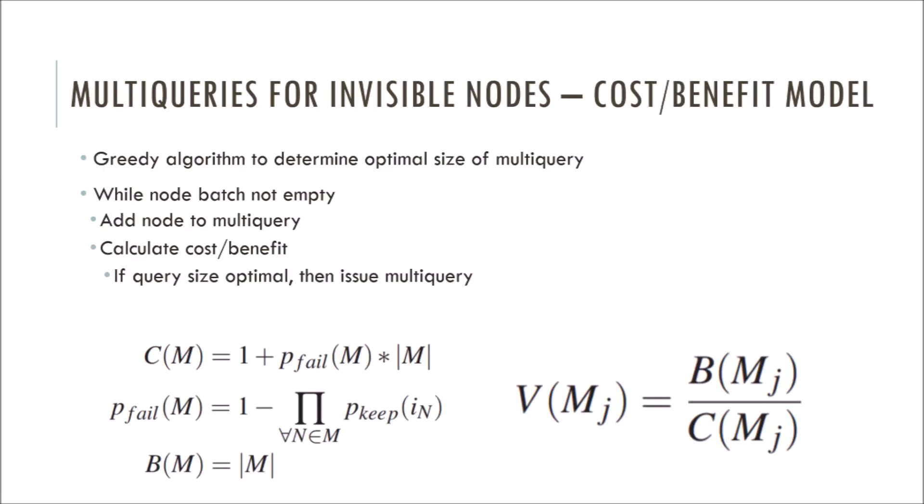So now that we know the visibility coherence, we can now determine the optimal size of a multi-query. Instead of evaluating all possible partitions of the batch into multi-queries, we use a greedy model which maximizes a benefit-cost ratio for each multi-query. While the IQ is not empty, we add a node to a multi-query. Then we determine the cost-benefit ratio using the equations below. We can calculate the ratio with the equation on the right for V. It turns out that the V reaches a maximum for a particular number of nodes, and then once we find the maximum, we can issue the multi-query.